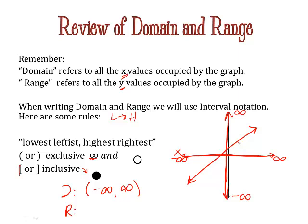Because of the arrows on each end, it's a line that goes on forever. So my range is also negative infinity to positive infinity. Lowest leftist, highest rightest—lowest to highest on both domain and range when you write your answer.